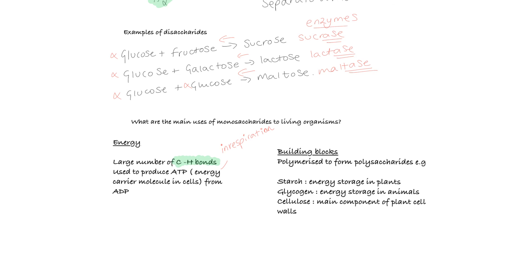They're also used as building blocks, so they can be polymerized to make polysaccharides like starch, glycogen and cellulose. We know that starch is the energy storage molecule in plants, glycogen is the energy storage molecule in animals, and cellulose is the main component of plant cell walls. They can also be built up into other kinds of molecules. For instance, pentoses can be used in DNA, RNA and ATP.